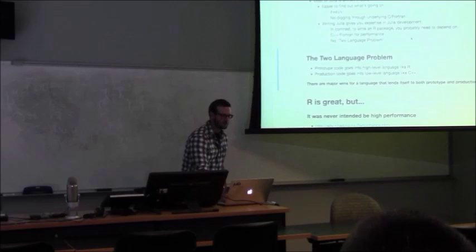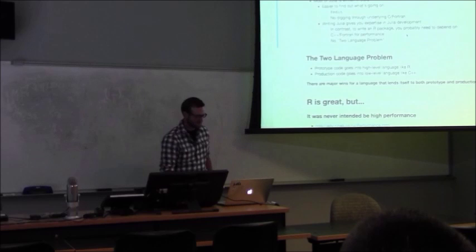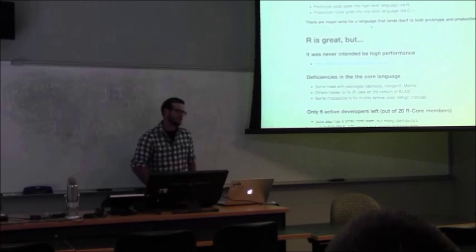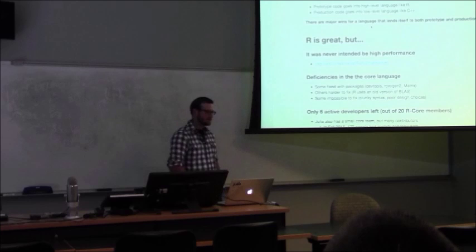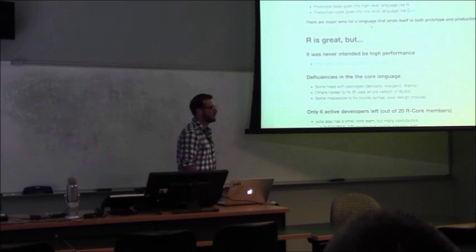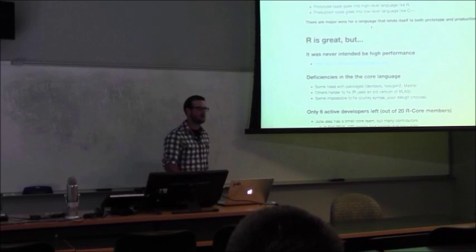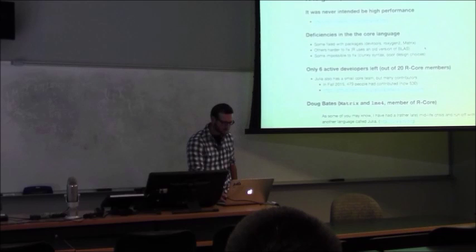Writing in Julia gives you expertise in Julia development. In contrast, if you want to be a very good R package developer, you need to depend on C++ and Fortran. The authors of Julia talk about this as the two-language problem - the idea that prototype code needs to go into a high-level language like Python or R, and production code needs to go into a low-level language like C++ or Fortran. It's very easy to go from slow prototype code in Julia to fast production code in Julia, which makes it great for algorithm development.